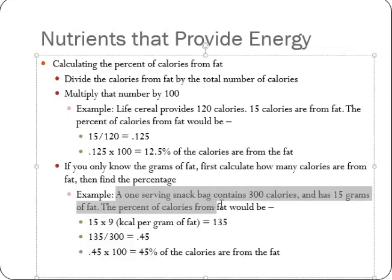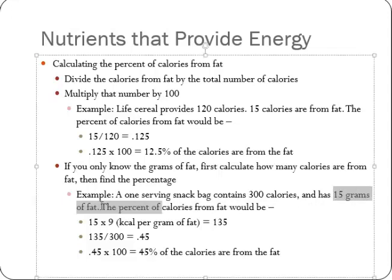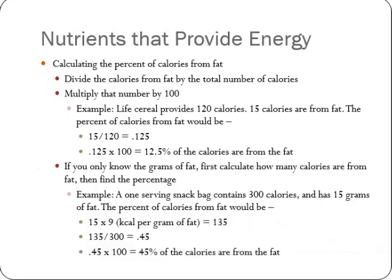A one-serving snack bag contains 300 calories and has 15 grams of fat. What is the percentage of calories from fat? First, figure out how many calories are from fat: 15 grams times 9 calories per gram equals 135 calories from fat. Divide 135 by 300 and you get 0.45, which is the same as 45%. So in this snack bag, 45% of the calories are from fat. The rest are probably from carbohydrates — if you're talking about potato chips or barbecue twists, you're looking at carbohydrates and fats.